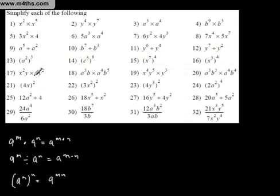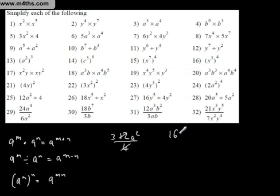Let's look at some examples of simplifying through division. We've got 12A squared over 4 — automatically, 12 over 4 gives us 3, so that's 3A squared. Then 16Y to the 5th over 4Y squared: we cancel 16 and 4 to give 4, and Y to the 5th divided by Y squared is Y cubed, giving us 4Y cubed. We're looking for common factors throughout.